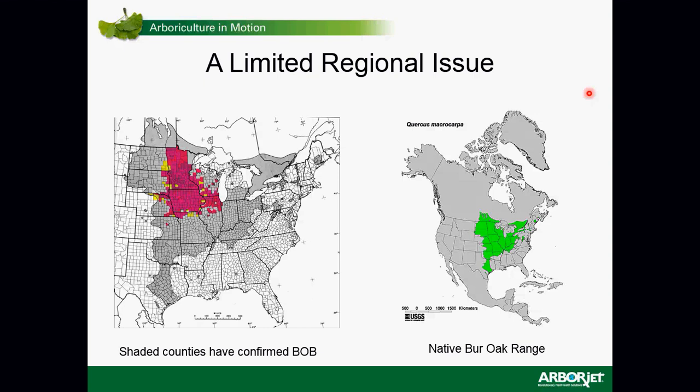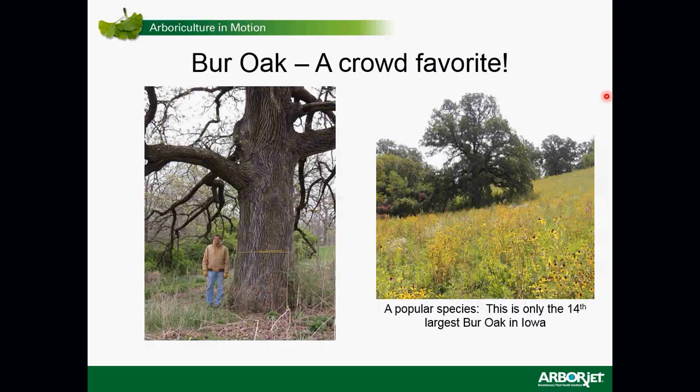The map also outlines where the Quercus macrocarpa oliviformis variety is most prevalent, and that is where you're going to find bur oak blight most commonly. Bur oak blight is important because people love bur trees. The picture on the left is a nice bur oak — that's only the 14th largest bur oak canopy — and of course they are very concerned that it has some bur oak blight symptoms.